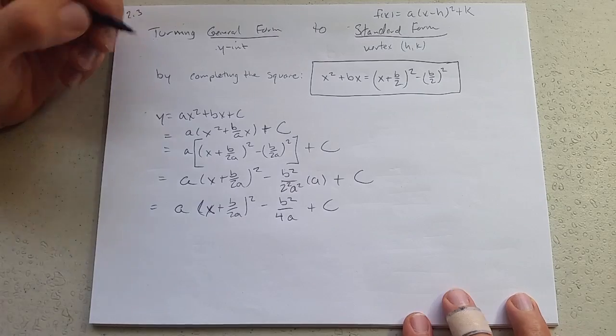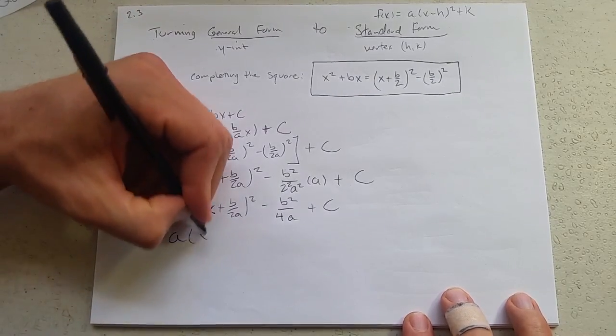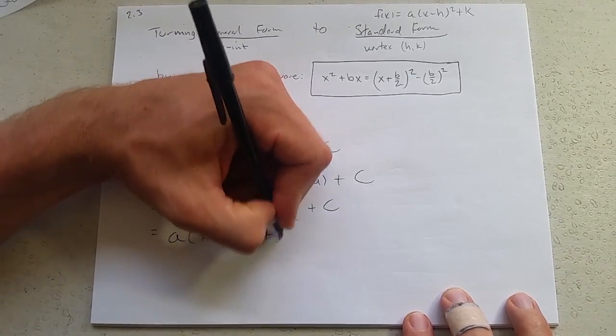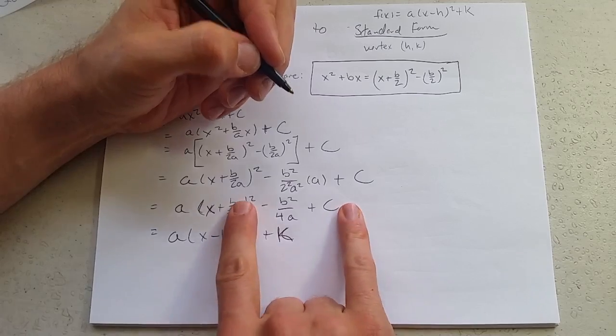This is general form. It doesn't look so pretty. But general form was a, x minus h squared plus k. So what are these pieces? k is all this.